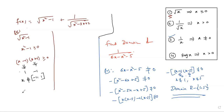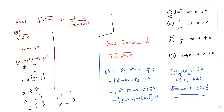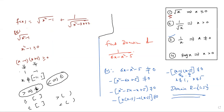Whenever you find a greater than or equal to sign, use a closed interval — this is the bracket rule. Whenever you find strictly greater than, use open interval. Whenever you find greater than, x does not belong. Whenever you find less than, x belongs. Greater than or equal to or less than or equal to use closed interval. Strictly greater than or strictly less than use open interval.